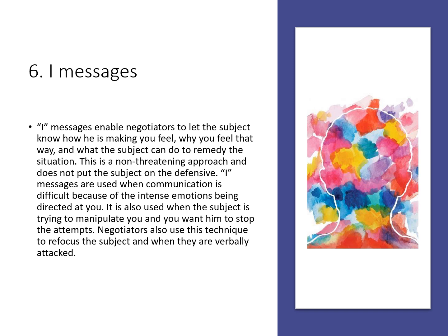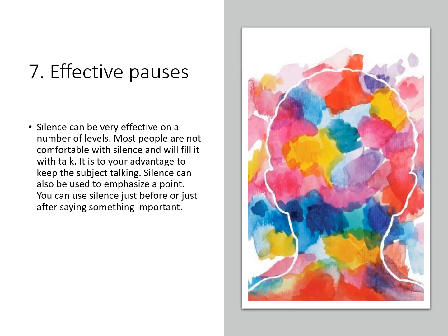Hostage negotiators also use 'I messages' frequently, which let the other individual know how they're making you feel, why you feel that way, and what they can do to remedy it. It's a non-threatening approach used when communication is difficult due to intense emotions being directed at you, or when someone is trying to manipulate you. Effective pauses are also really important — we mustn't be frightened of silence. Silence allows space for something to be thought about and processed more deeply.